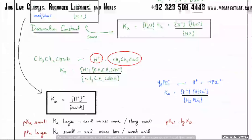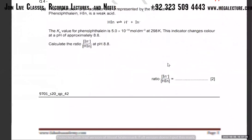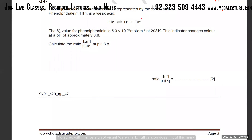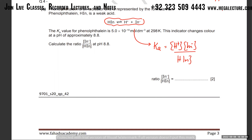Let's do more questions related to this. Here's another weak acid. What is the equilibrium constant for this? It's called the dissociation constant Ka, and it's going to be the H⁺ concentration times the A⁻ concentration divided by the acid concentration HIN. That's Kc for this reaction — the dissociation constant.